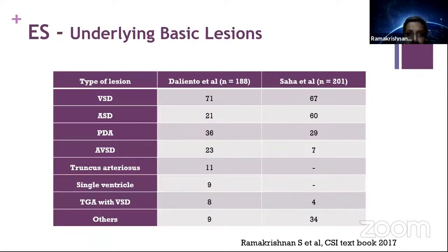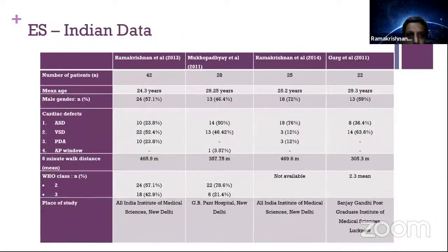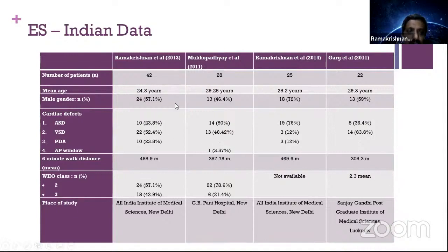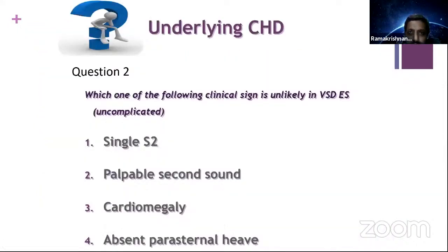What are the common underlying lesions in Indian Eisenmenger series? Various Indian series from SGPGI, AIIMS, and GBP are roughly around 50% VSDs, with remaining 25% being ASD and PDA. Most Indian Eisenmenger syndrome patients have a reasonably well-preserved 6-minute walk distance and are mostly in functional class 2 or 3.